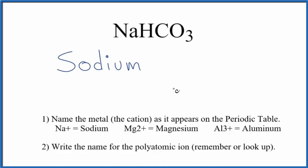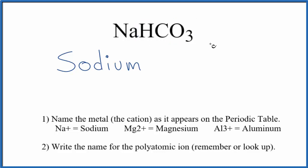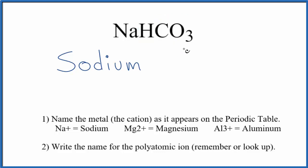To successfully write the name, you need to recognize that HCO3 is a polyatomic ion, so we have to name it with a special name. There are two ways you could do it: you could memorize that HCO3 is the bicarbonate ion, also called the hydrogen carbonate ion — or if you're allowed, you could look it up. Let's look this up.